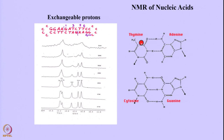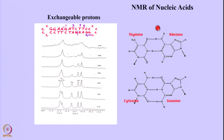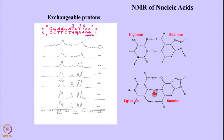The Watson-Crick base pairs are indicated — thymine-adenine and cytosine-guanine. The observable protons are the imino protons, which appear in this range around 10 to 15 ppm. The imino protons around 9.5 to 10 ppm exchange more rapidly with water so often you do not see those. Essentially you will see one imino proton signal per base pair — because there is only one imino proton per base pair.